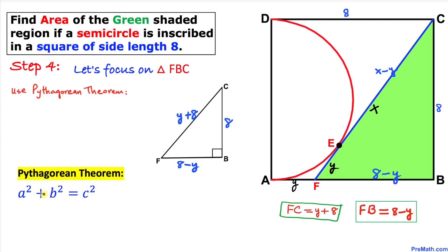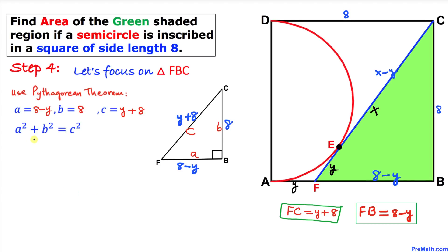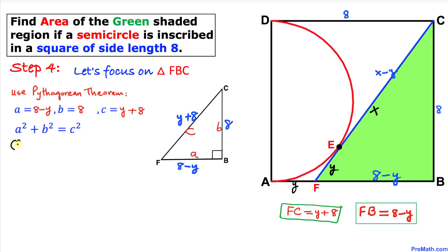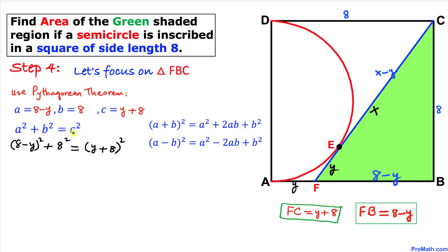The Pythagorean theorem states a² plus b² equals c², where c is the longest side. Here, FC is c, the horizontal side FB is a, and the vertical side BC is b. Filling in the values: a is 8 minus y, b is 8, and c is y plus 8. So we get: (8 minus y)² plus 8² equals (y plus 8)².